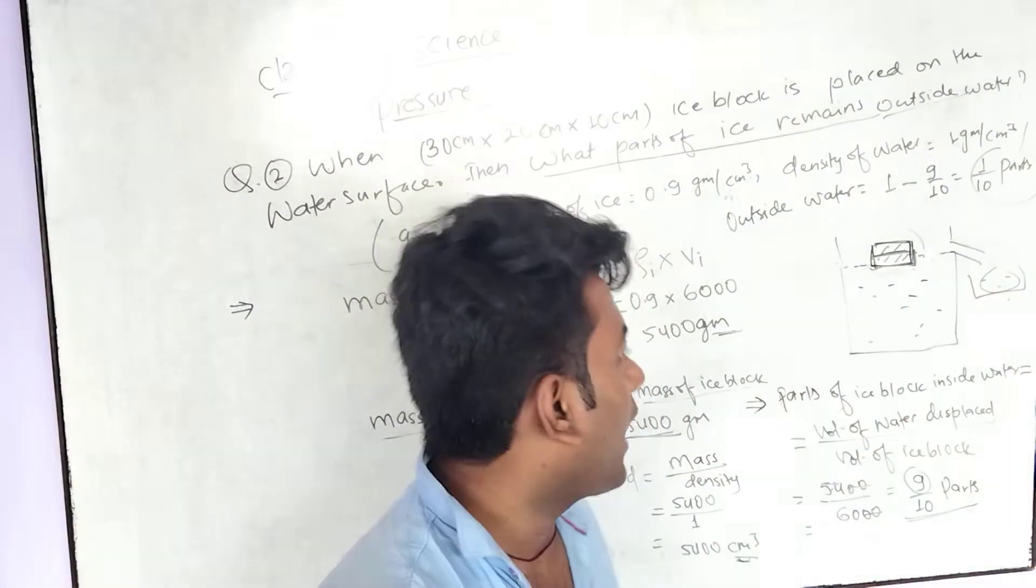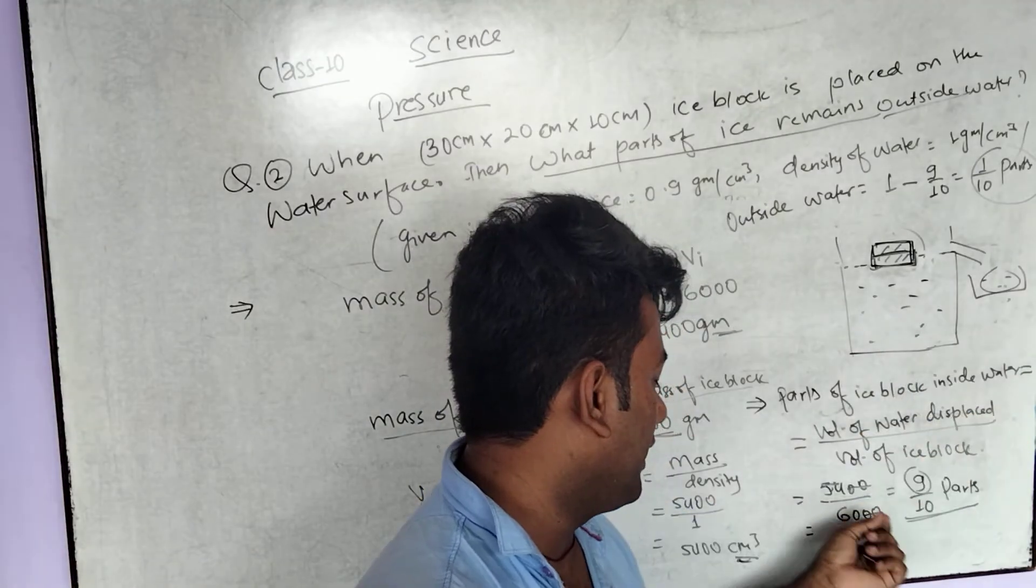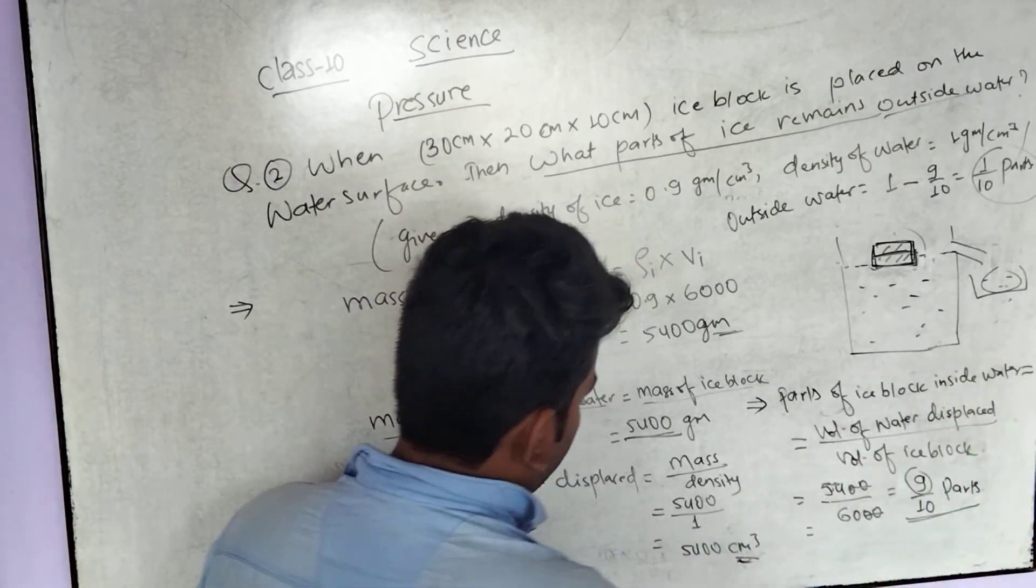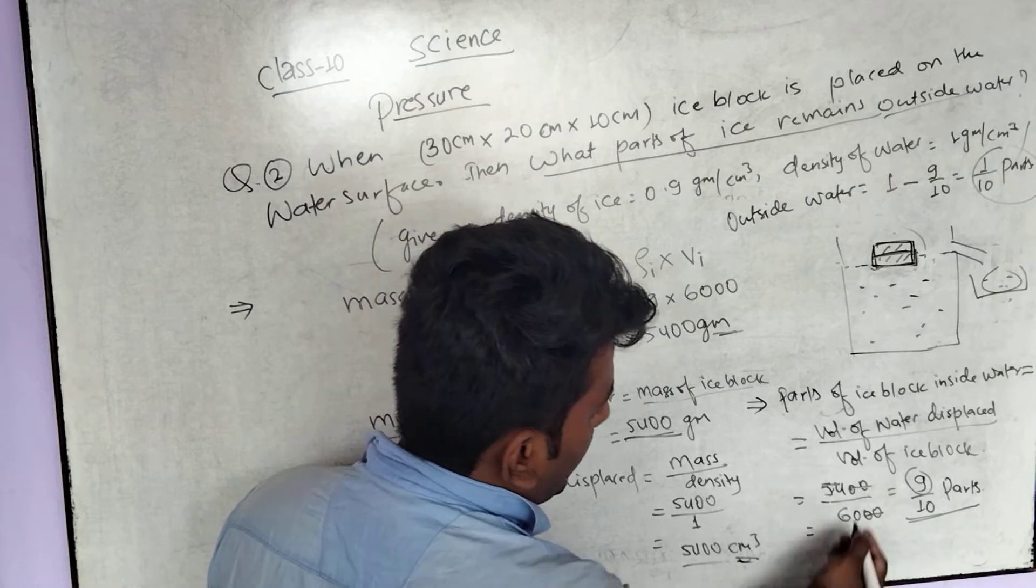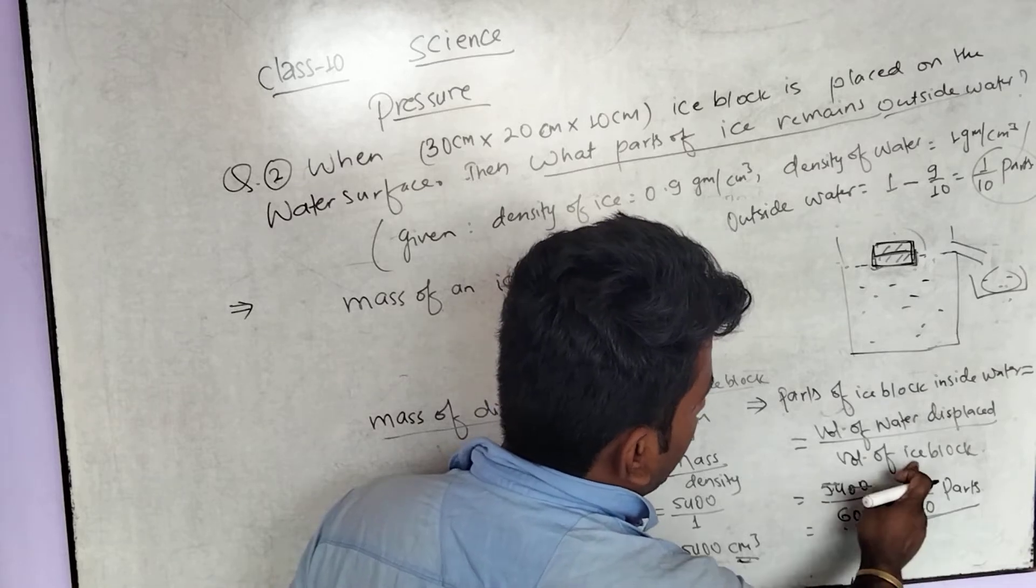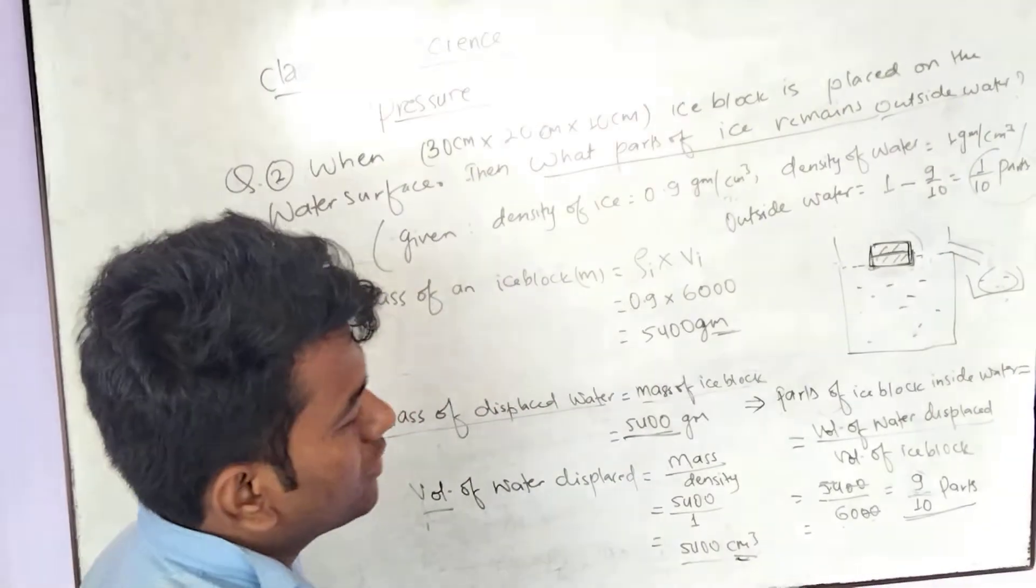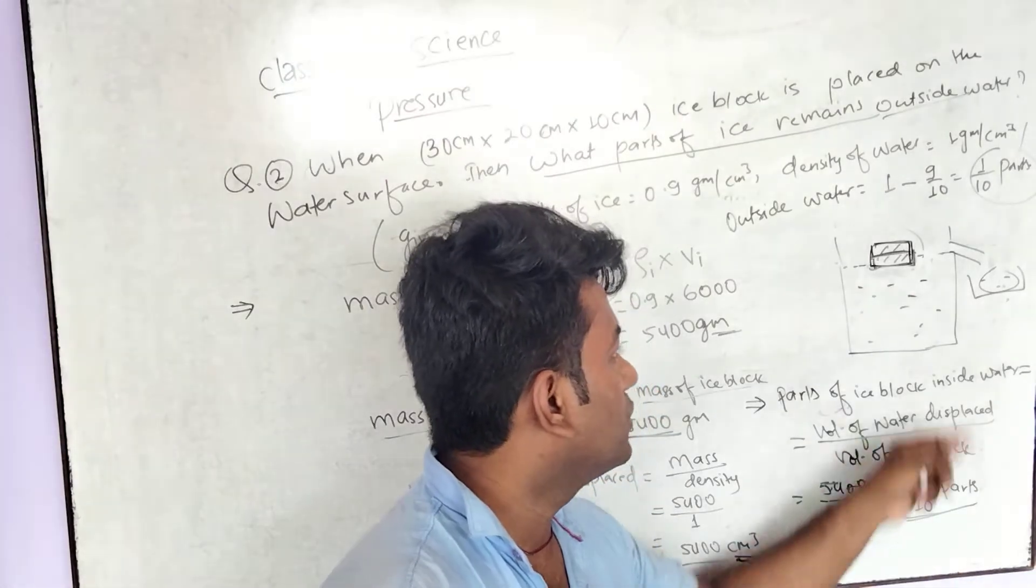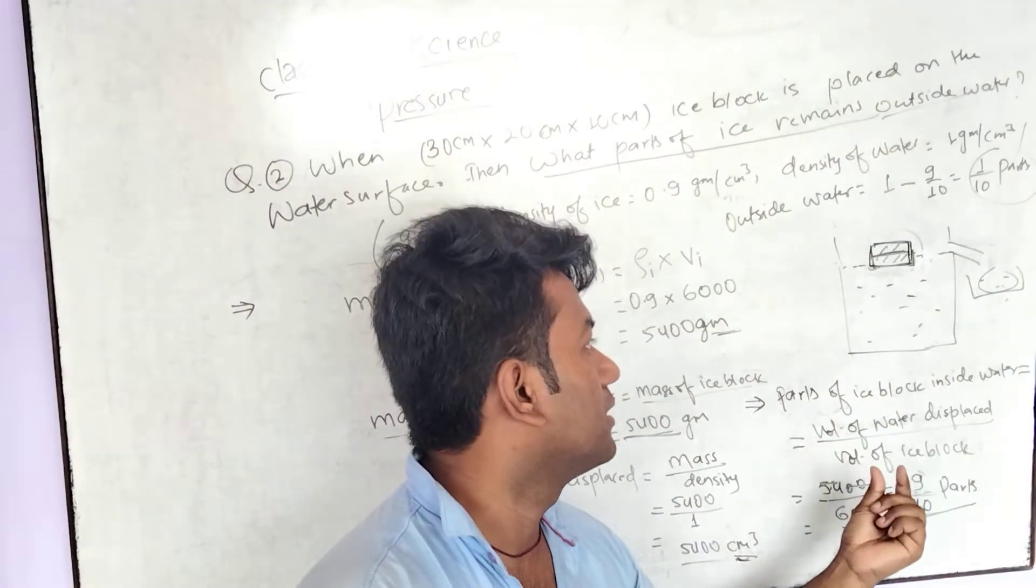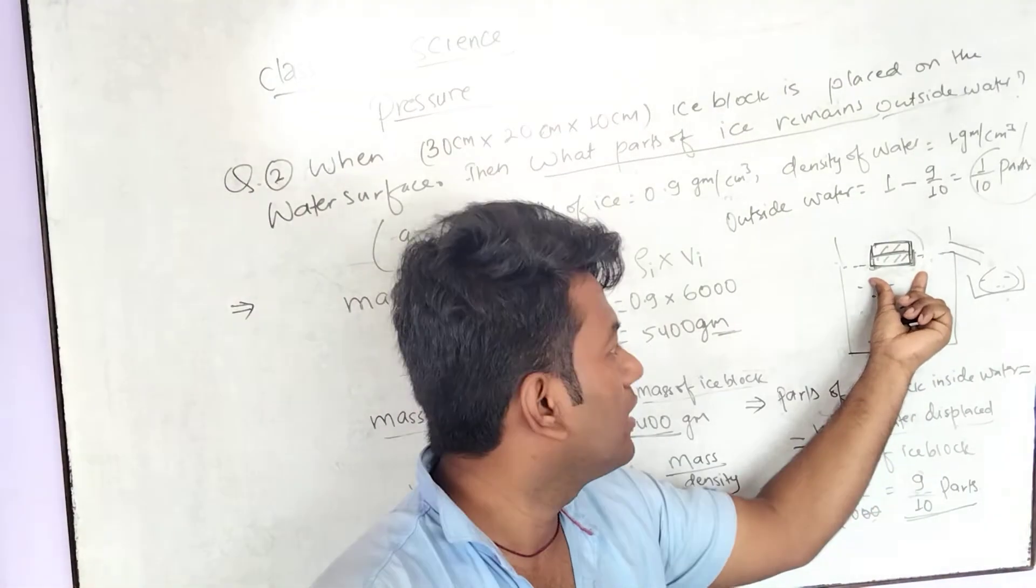The parts of the ice block that gets immersed inside the water is equal to the volume of water displaced divided by the volume of the ice block. So 5400 centimeter cube divided by 6000 centimeter cube. This is 9 by 10 parts. So 9 by 10 parts gets immersed inside the water.